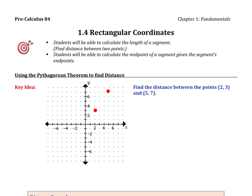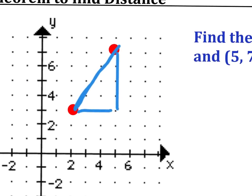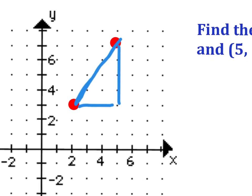Our focus is to find this length right here. In order to do that, we're going to make a little right triangle so that we can use the idea of a squared plus b squared equals c squared — the Pythagorean theorem, which is what the distance formula is based on.